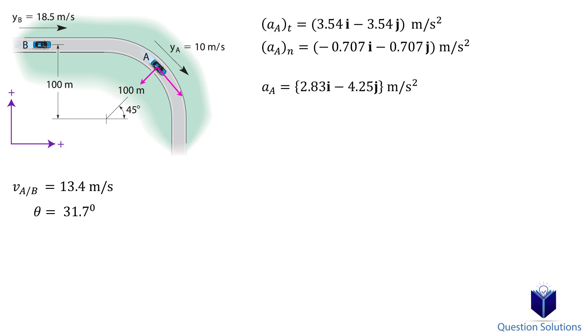For car B we only have tangential acceleration and so acceleration can be written as just one component. Now we can use the relative acceleration equation. As before, it's relative acceleration of car A with respect to car B.